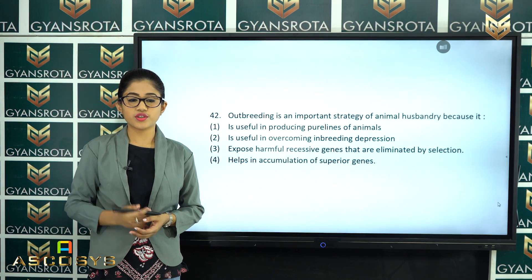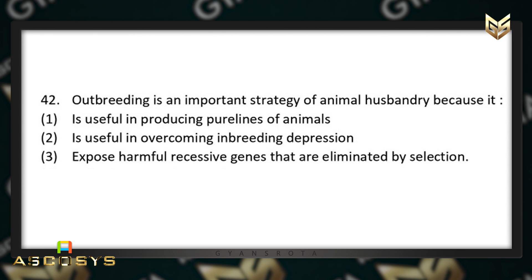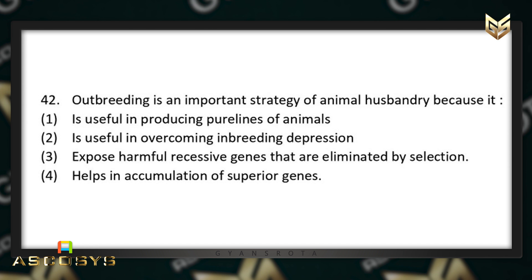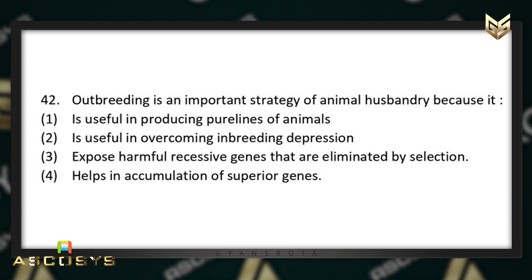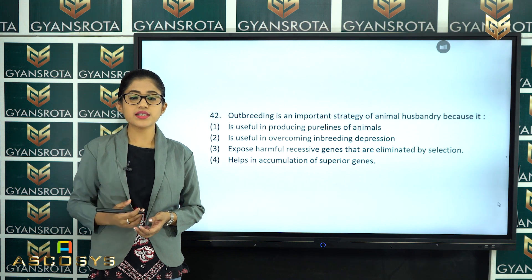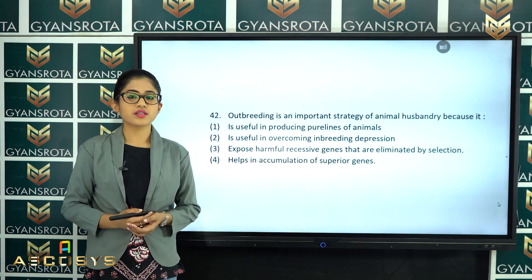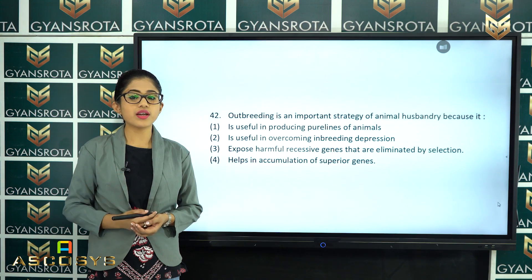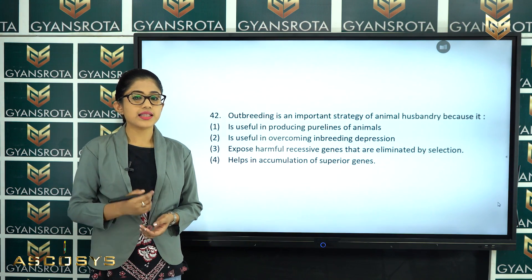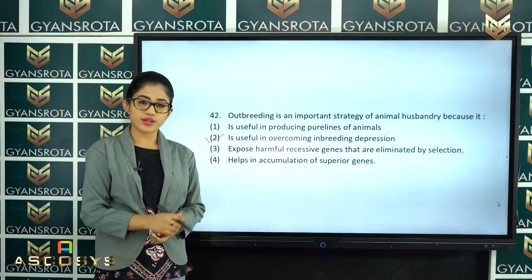The next question is question number 42. Outbreeding is an important strategy of animal husbandry because it is useful in producing pure lines of animals, or because it is useful in overcoming inbreeding depression, or it exposes harmful recessive genes eliminated by selection, or it helps in accumulation of superior genes? From the chapter Strategies for Enhancement in Food Production, outbreeding is useful in overcoming inbreeding depression. Option number 2 is the correct answer.